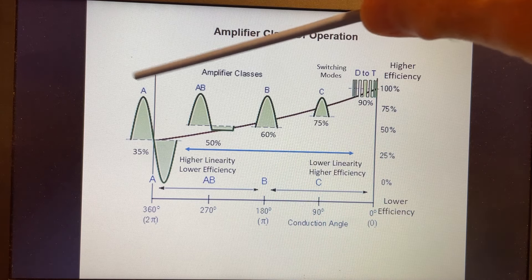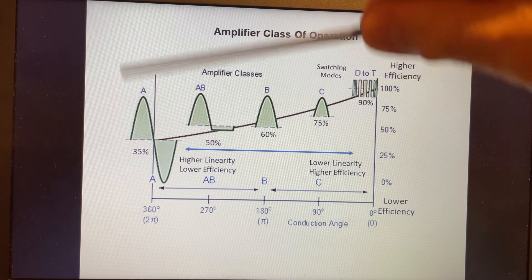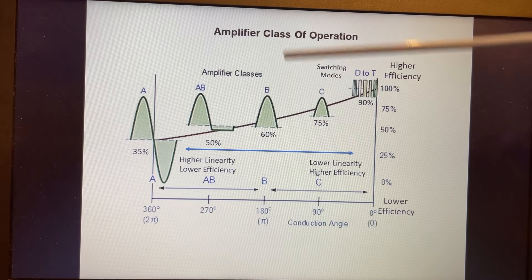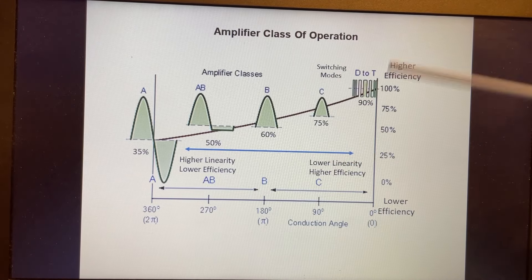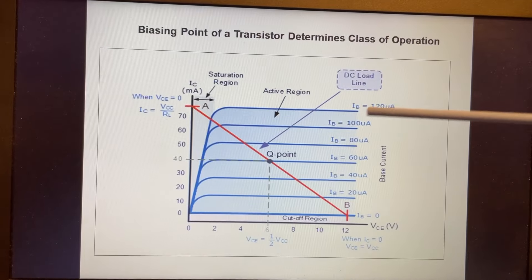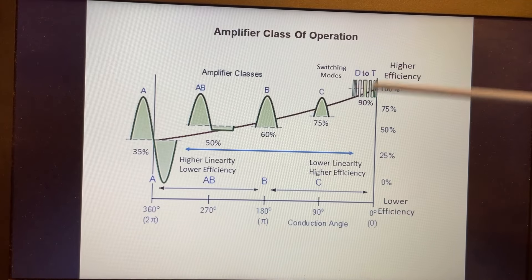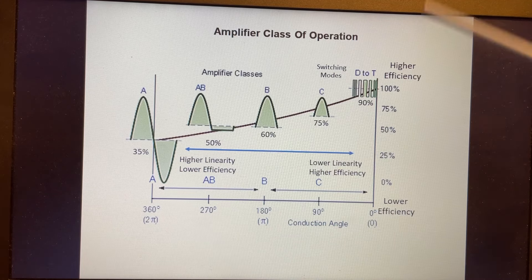Looking at the different classifications: class A has a full conduction angle — the transistor is conducting at 360 degrees. Then we go to class AB at 270 to 360 degrees. Class B is a 180-degree conduction angle, and class C is 90 degrees. Class A through C operate in the linear region of the device, while class D and class E are considered switching amplifiers.